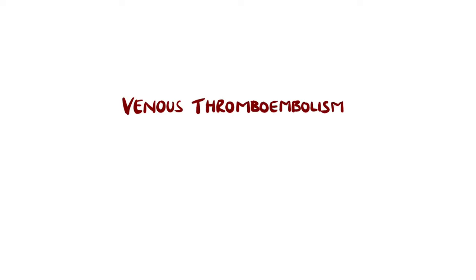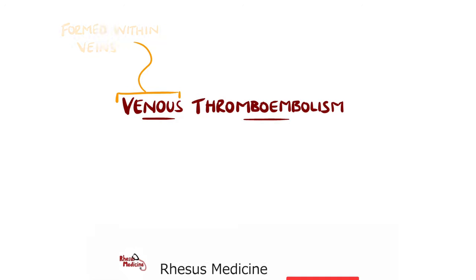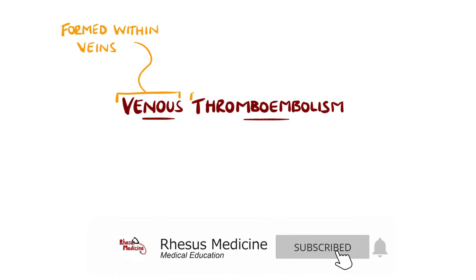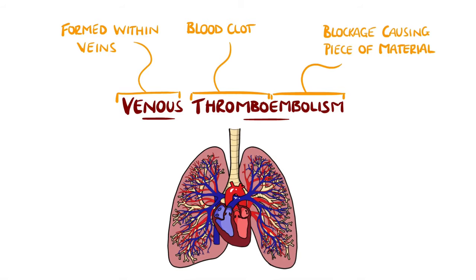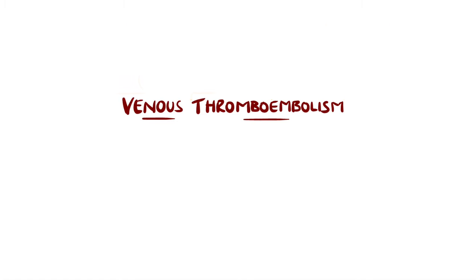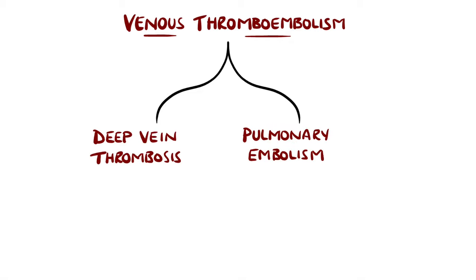The term venous thromboembolism refers to the formation of blood clots within veins. The embolism portion of the name comes from the fact that pieces of the thrombus can break off, becoming emboli. These are defined as pieces of material that travel in the blood and can cause blockage within blood vessels. Deep vein thrombosis and pulmonary embolism are the two main conditions within this term.